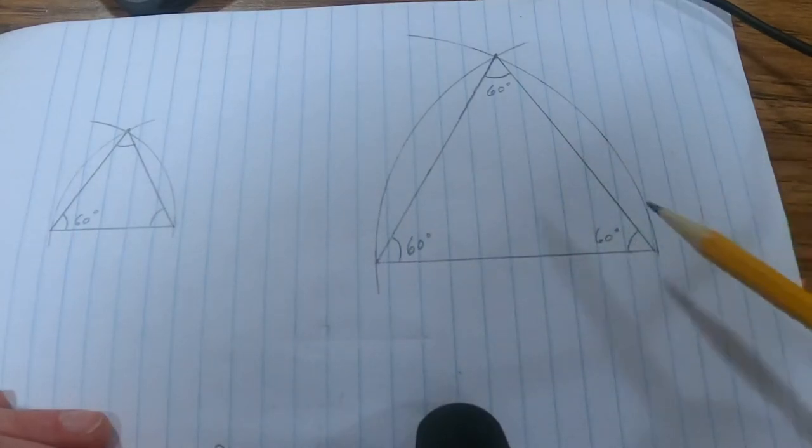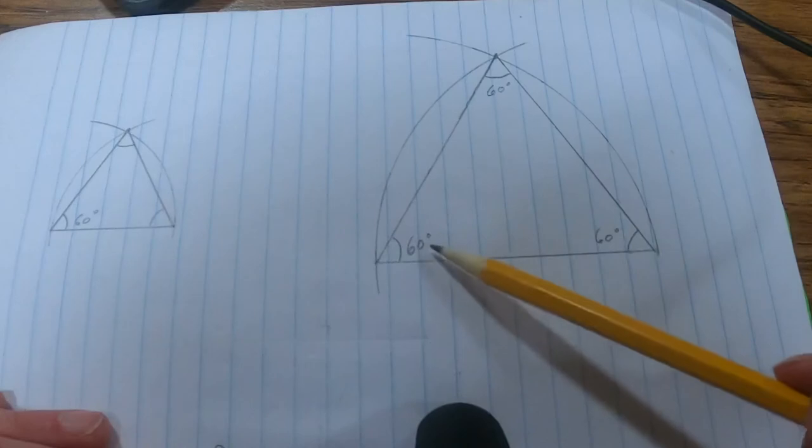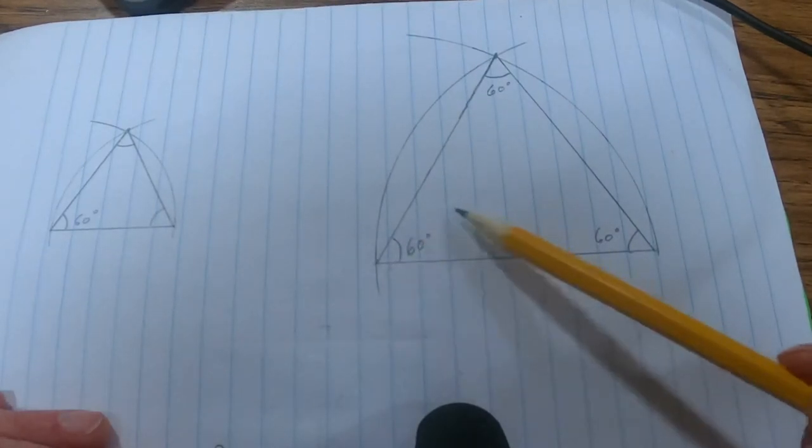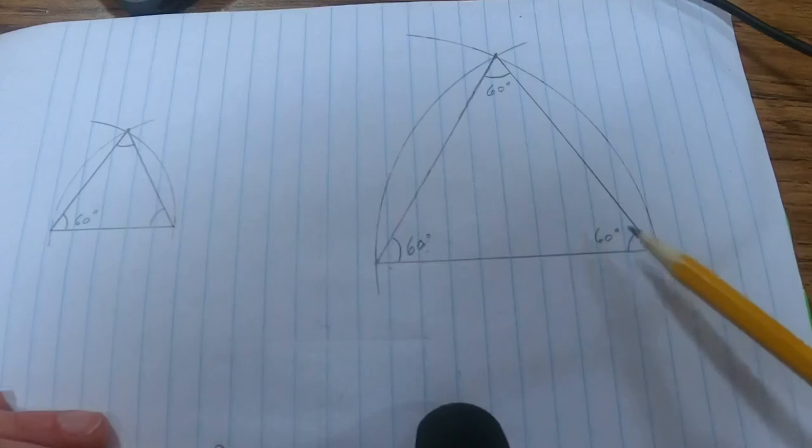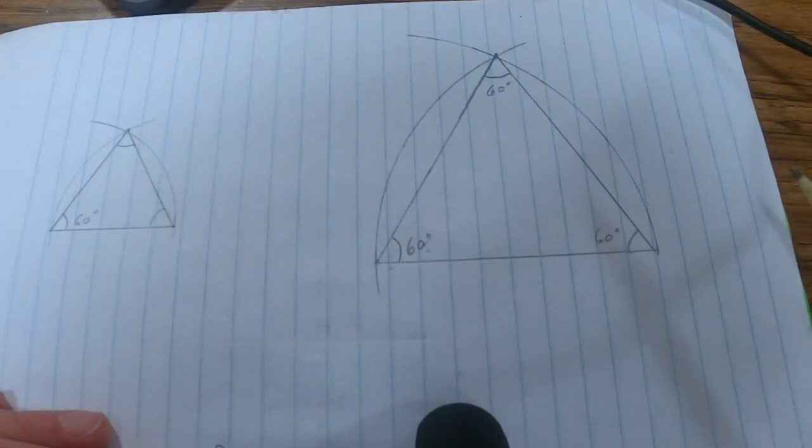Just remember that our angle measures should be labeled inside of our shapes. Some of us are labeling angle measures out here or down here. Angle measures should always be labeled right next to the angle that they are. So this is a 60 degree angle, I've labeled it 60 degrees, labeled 60 degrees, labeled. Good luck today and thanks for watching.